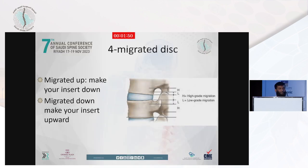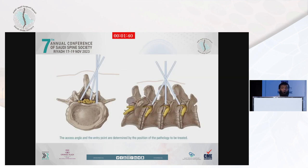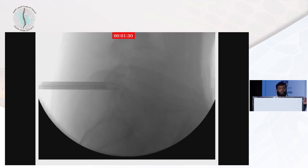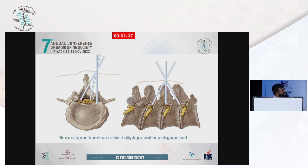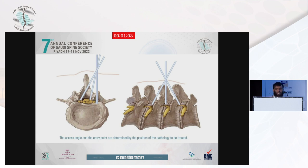Migrated disc — this is our conflict at meetings. Usually they say you cannot reach a far upward or downward migrated disc. But we can manage it with a simple change in the insertion of the working sleeve and channel. If the disc is migrated upward, make your insertion a little bit lower — not two centimeters directly, but slightly down — to grasp it from above. If the disc is migrated downward, make your insertion two millimeters upward to grasp it from below. This picture, usually taken from a biportal reference, gives us a useful hint.